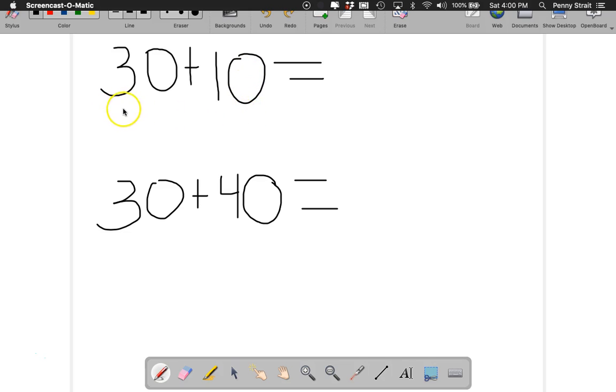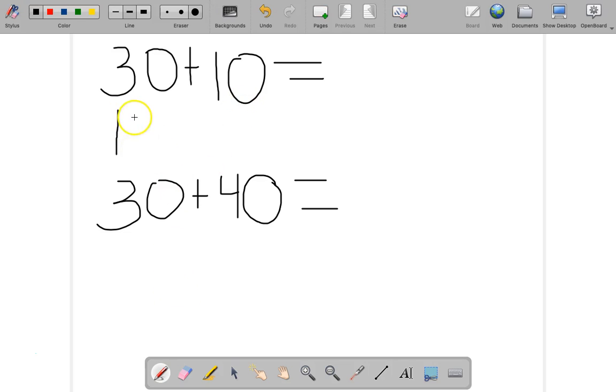First thing we're going to do is read the equation: 30 plus 10. I'm going to draw 10 sticks. I'm going to draw a place value model. I have 1 ten. That's 10, 20, 30.